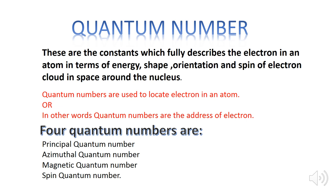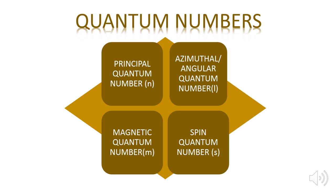There are four quantum numbers. The first is the principal quantum number, denoted by small n — it describes the size of the orbital or the energy level of an atom. Second is the angular quantum number, denoted by small l — it describes the shape of the orbitals. Third, the magnetic quantum number, denoted by small m — it describes orbital orientation in space along the x, y, and z axes. Fourth, the spin quantum number, denoted by small s or ms — it describes the direction in which the electron spins, either clockwise or anti-clockwise.